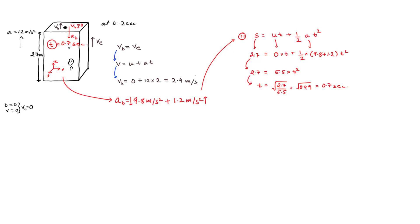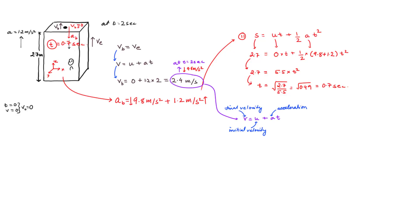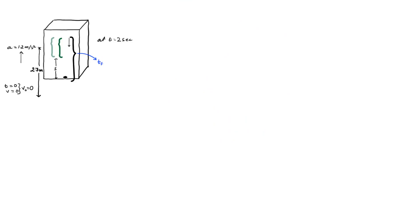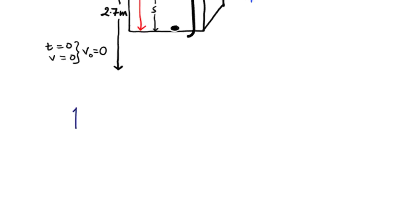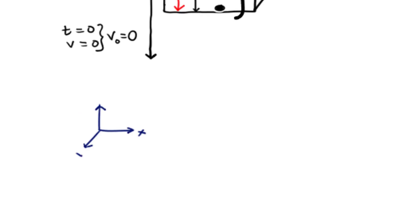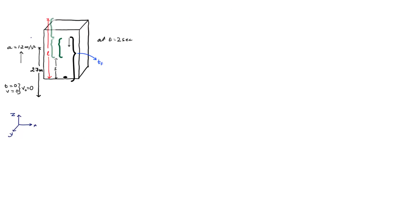Keep in mind that the bolt initially had a velocity of 2.4 meters per second since it was accelerating with the elevator car. The moment it started to fall, the elevator continued accelerating upward at 1.2 meters per second squared, but the bolt began accelerating in the opposite direction under gravity at minus 9.8 meters per second squared. So it will take some time to reach 0 meters per second in the upward direction. We can calculate that time using the first equation of motion. In the second part, we must find the displacement and distance covered in the frame of reference of the elevator shaft.